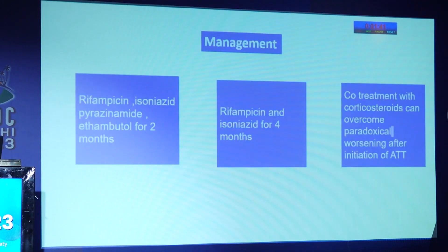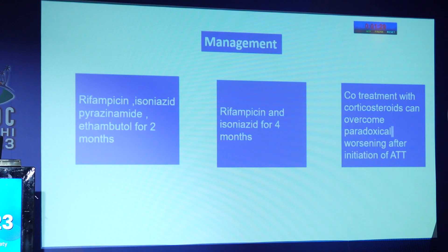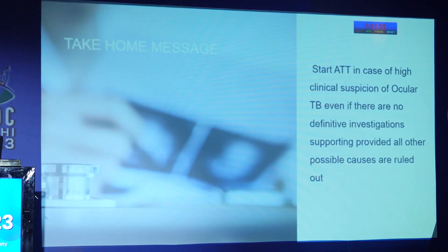The management is similar to pulmonary TB — rifampicin, isoniazid, pyrazinamide and ethambutol for two months, then rifampicin and isoniazid for four months. Co-treatment with corticosteroids can overcome paradoxical worsening after initiation of ATT. We recommend starting ATT in cases of high clinical suspicion of ocular TB, even if there are no definitive investigations supporting, provided all other possible causes are ruled out.